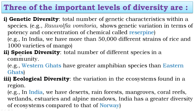The second level is species diversity. This refers to the total number of different species found in a community or region. For example, comparing the Western Ghats and Eastern Ghats of India, we find a greater number of amphibian species in the Western Ghats. Some communities have more species, some have fewer — this is species diversity.